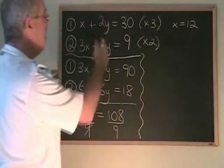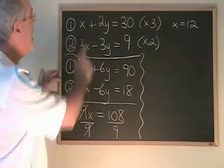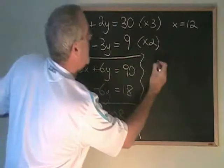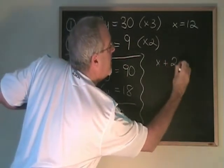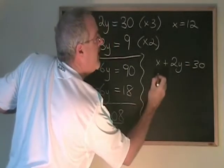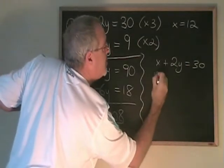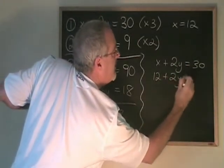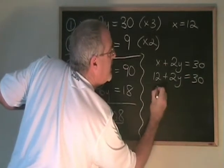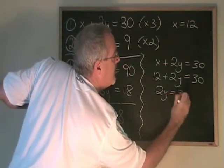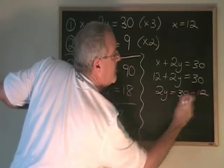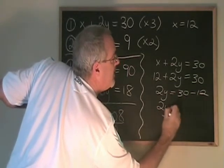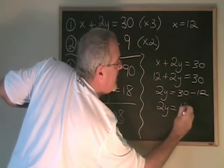Now to find our y, we'll plug x equals 12 into either of the original equations. I'm going to use equation 1. x plus 2y equals 30. If x equals 12, 12 plus 2y equals 30. 2y equals 30 minus 12. 2y equals 18.